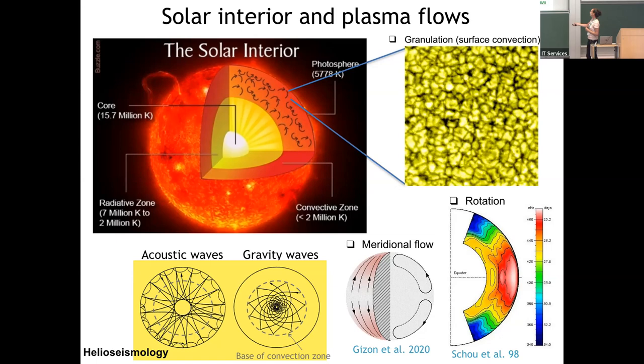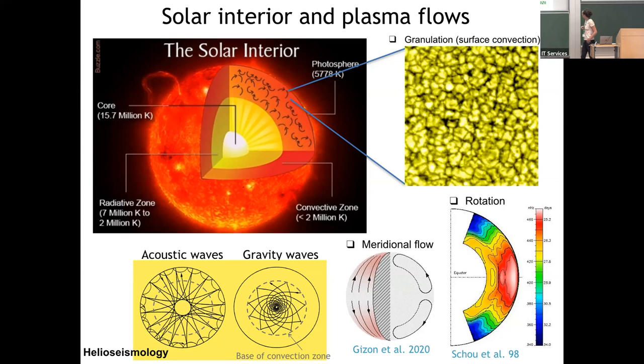Thanks to acoustic waves interfering to produce modes, and gravity waves propagating inside the radiative interior, helioseismology's great success was to infer the rotation profile in the sun: rapid rotation at the equator, slow rotation at the poles. Going into the radiative zone there is a very flat, rigid rotation profile. This is one of the mysteries — how you produce this flat profile, and how you constrain this transition from solid body to differential rotation in a very small zone called the tachocline.